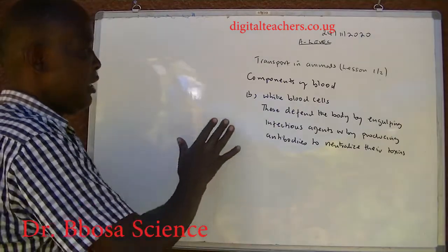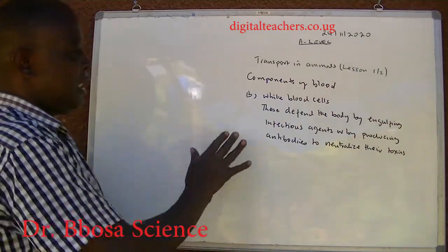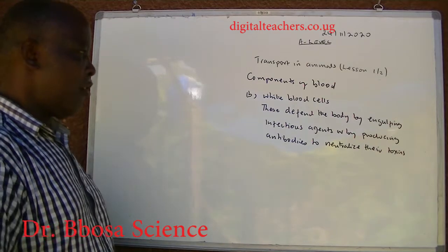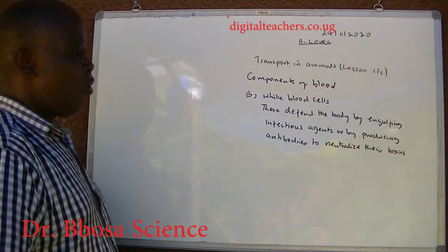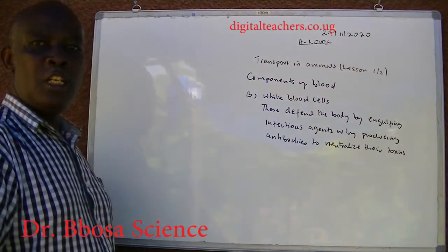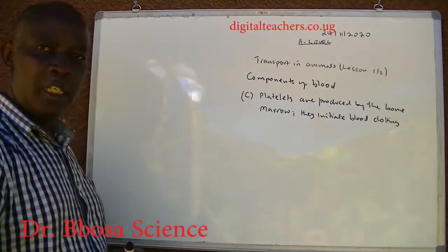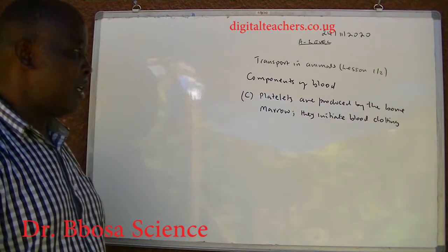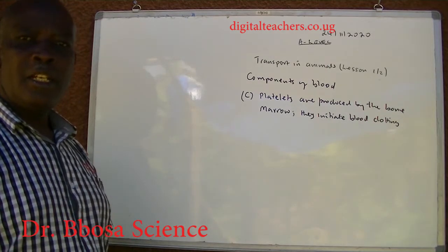White blood cells defend the body by engulfing infectious agents or by producing antibodies to neutralize their toxins. Platelets are produced by the bone marrow and they initiate blood clotting.